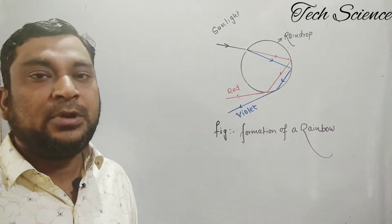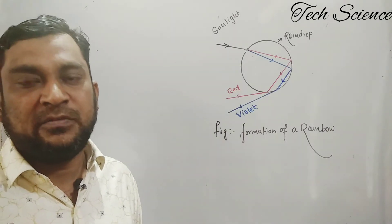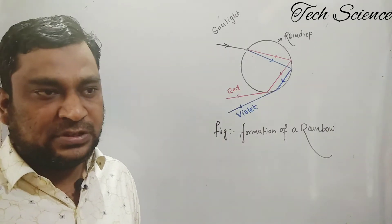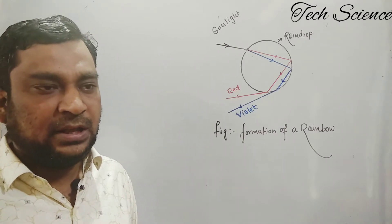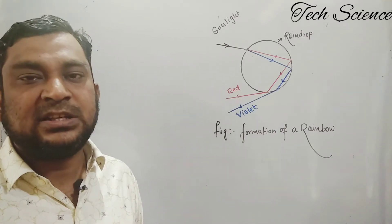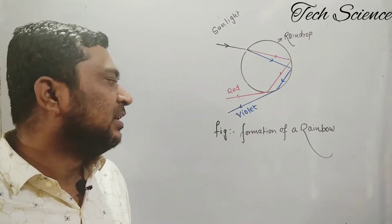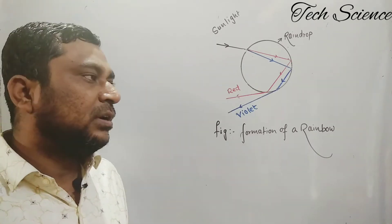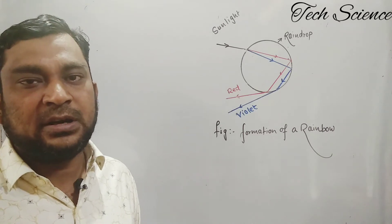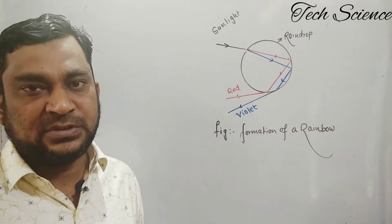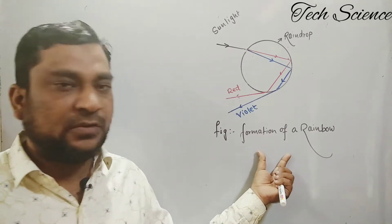Before we start with the formation of rainbow, you must know the concept of partial and total internal reflection. I uploaded that video yesterday, and if you have not seen it, the link is given in the description. You must see that video because to understand the phenomena of rainbow, total internal reflection must be clarified first.